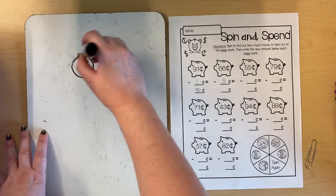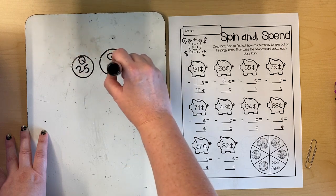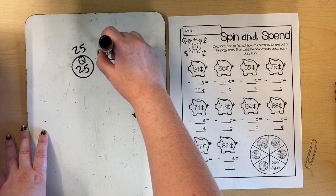I'm gonna start by drawing 66 cents. I'll do two quarters because I know that 25 cents and 25 cents is 50. Here's 25, 50.